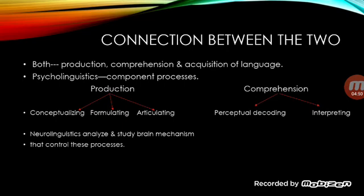These differentiating features also help us grasp the connection between psycholinguistics and neurolinguistics. Both psycholinguistics and neurolinguistics are essentially related to the production, comprehension, and acquisition of language by the human brain. Psycholinguistics takes into consideration the component processes of language production and comprehension. Production involves three component processes: conceptualizing, formulating, and articulating, while comprehension involves two component processes: perceptual decoding and interpreting.